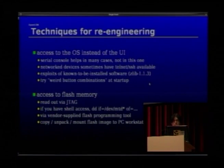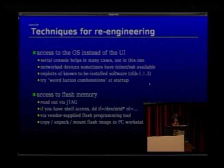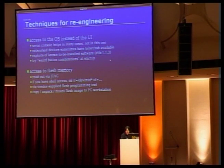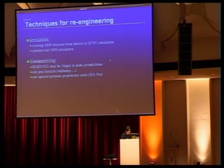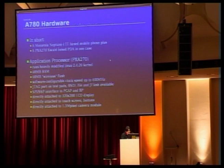Access to flash memory over JTAG is also a possible attack vector — if JTAG is working, you can read out the flash memory. If you manage to get shell access, you can copy the MTD devices. Sometimes vendor-supplied flash programming tools allow reading files, though for Motorola I'm not aware of software for reading firmware images, only writing. If you have a copy, you just copy, unpack, and mount it on a PC workstation. You can also run ARM binaries in QEMU software emulation or commercial ARM emulators. Disassembling may be legal in certain jurisdictions; tools like IDA Pro are useful.